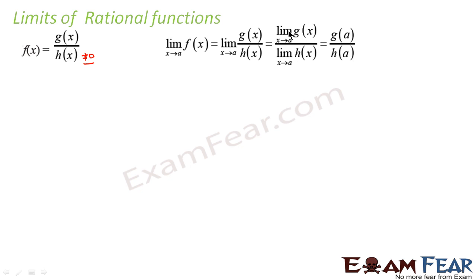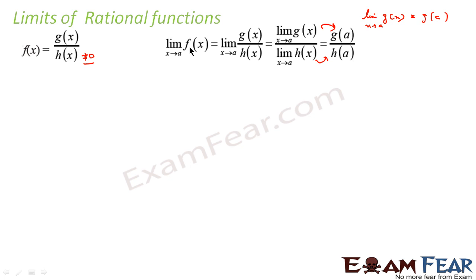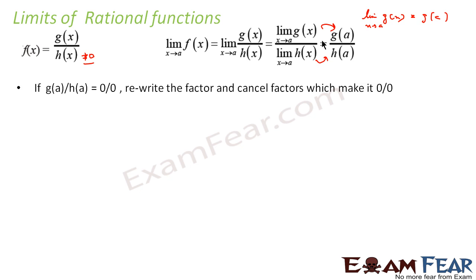We also know that the limit of g(x) where x tends to a is nothing but g(a). Similarly, limit of h(x) where x tends to a is h(a). So we can say that the limit of the rational function where x tends to a is nothing but g(a) by h(a), where f(x) is in g(x) by h(x) form. We also have to observe that if g(a) and h(a) both come out to be 0, we get a 0 by 0 form.